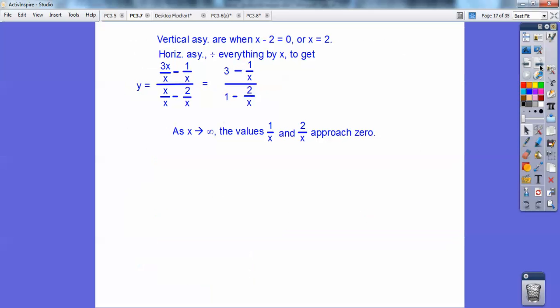And then when x goes to infinity, I think they have to have that over here. Yeah, when x goes to infinity, the value 1 over x and 2 over x approach 0, because 1 over infinity is 0, and 2 over infinity is 0. So what happens is these drop off, and you're left with 3 over 1. So your horizontal asymptote is y equals 3 over 1, or y equals 3.